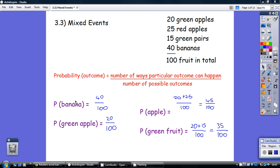If you're trying to work out the chances of getting a banana, and there are 40 bananas, but there are 100 bits of fruit, then the chances of getting a banana are 40 out of 100. And we just write that as a fraction: 40 over 100, it just means 40 out of 100.